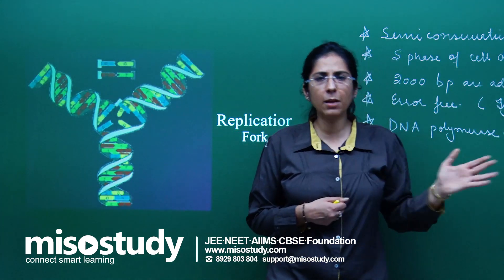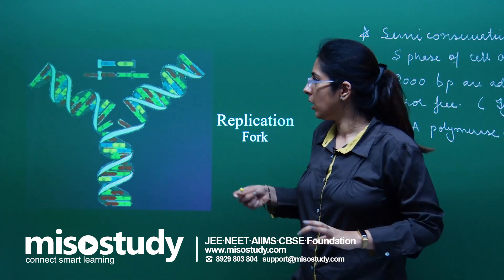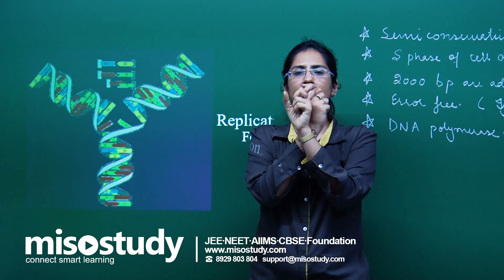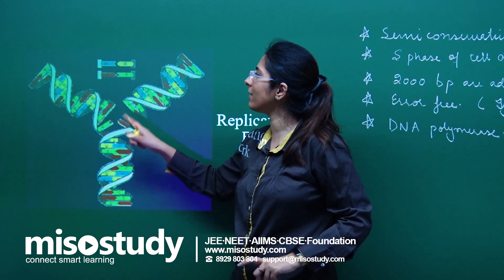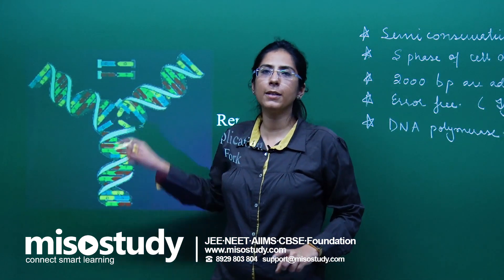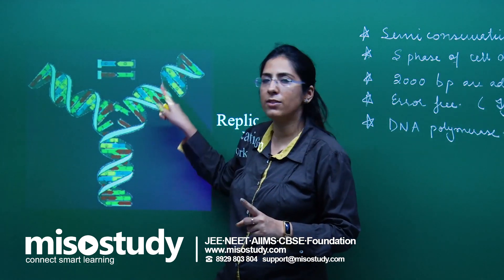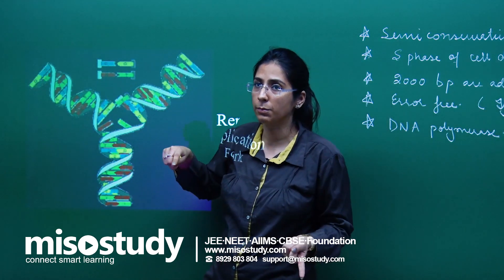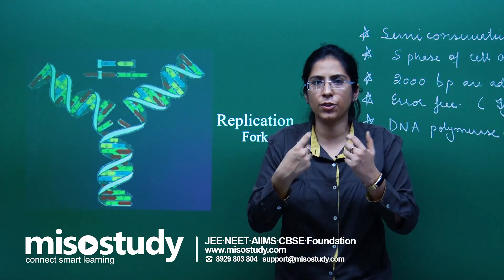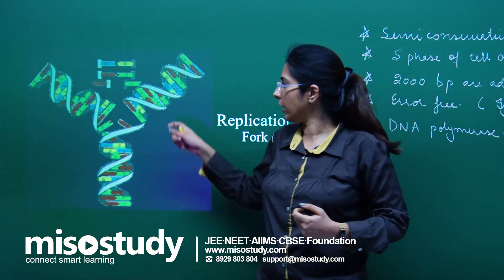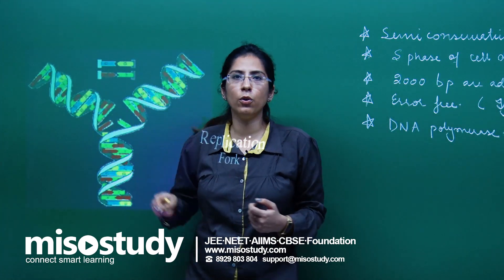In the case of eukaryotes, there are multiple places for the origin of replication. When I have two strands of DNA wrapped around each other, I want to separate them. Once separated, each strand acts as a template and a new strand is synthesized, because the nucleotides in the single strand provide a base for attachment of complementary nucleotides.